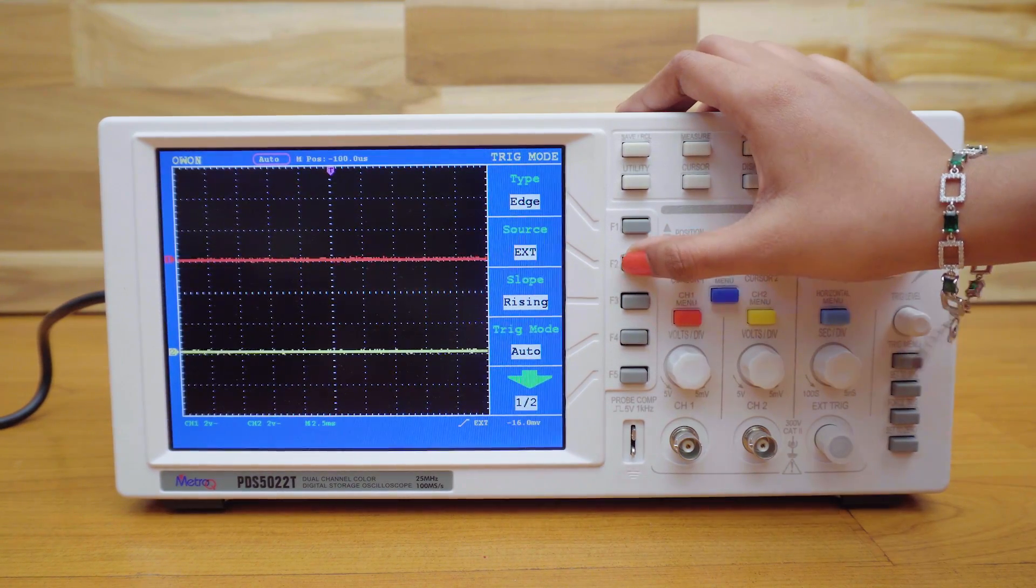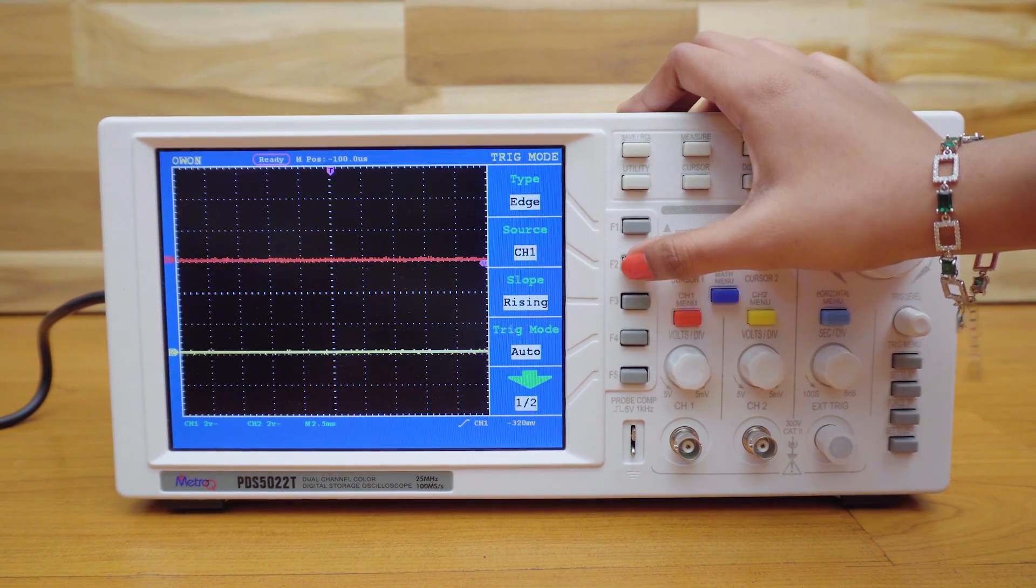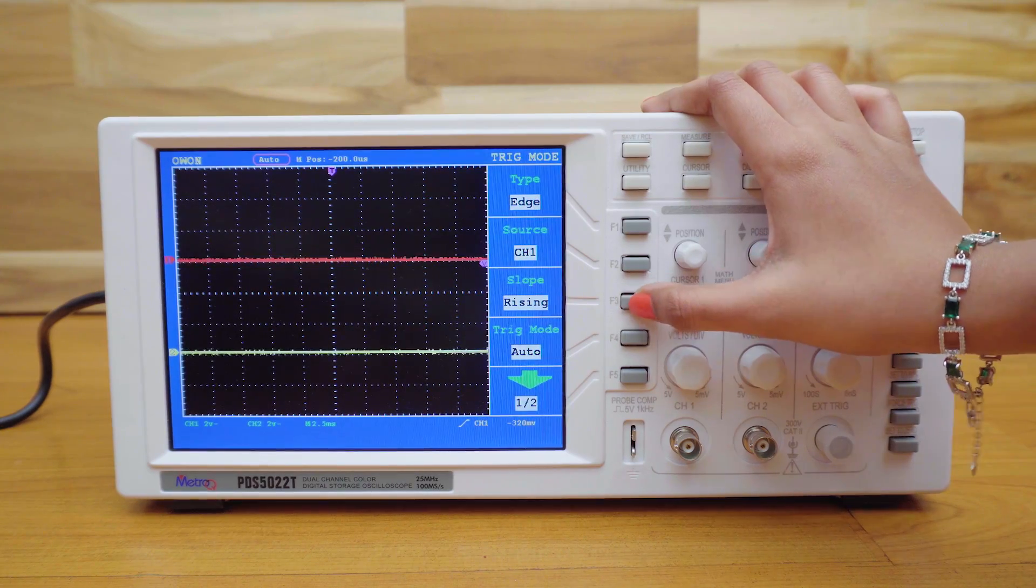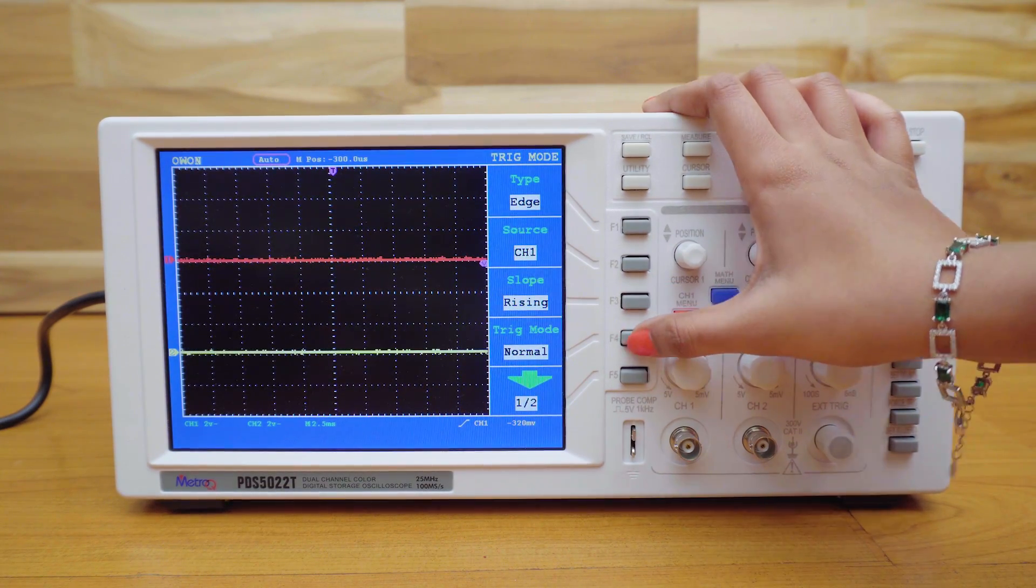From here, you can select the type, source of the horizontal sweep oscillator. There are some more options in the trigger menu.